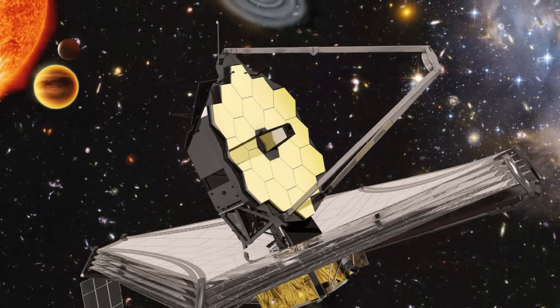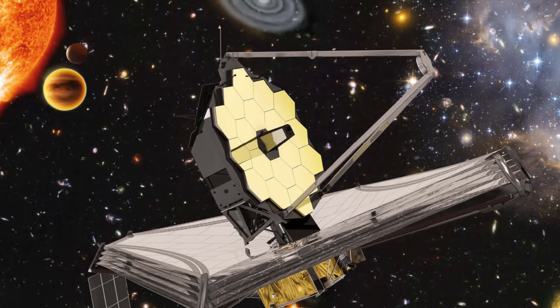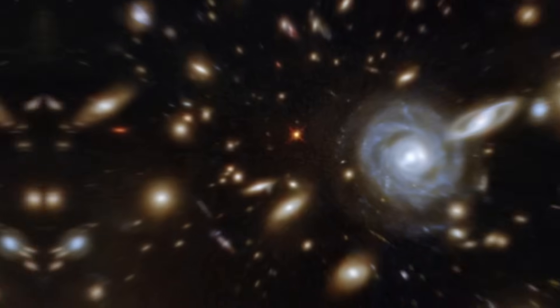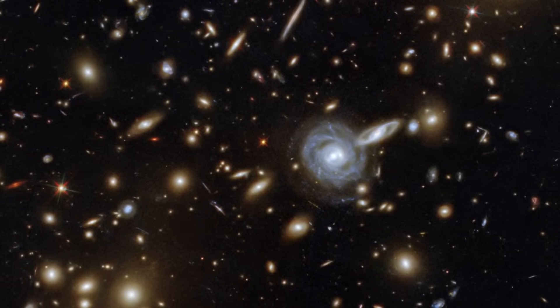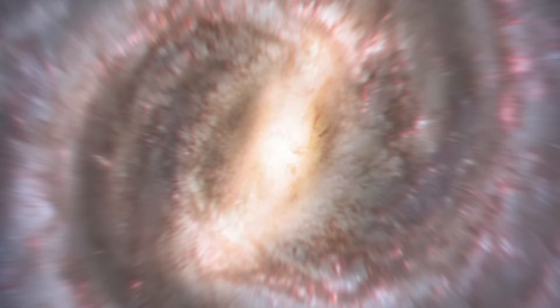Renowned theoretical physicist Michio Kaku recently revealed a startling discovery made by the James Webb Space Telescope. This multi-billion dollar telescope has identified seven colossal galaxies, each approximately the size of our own Milky Way.